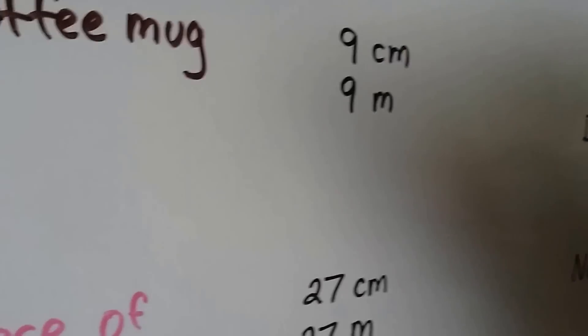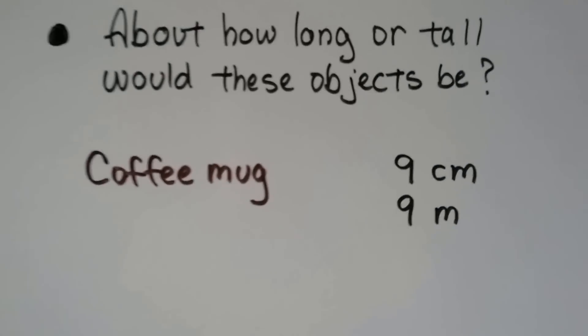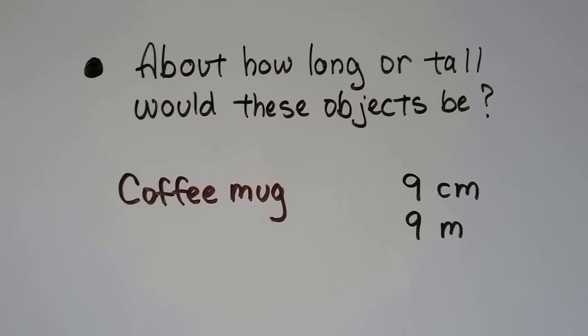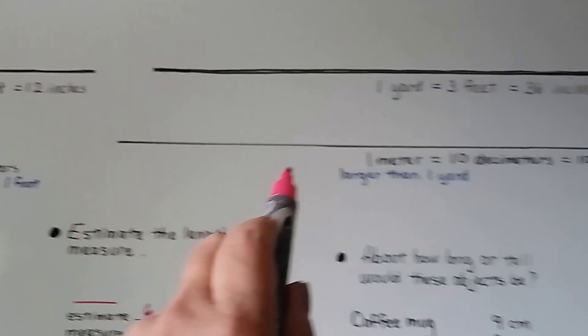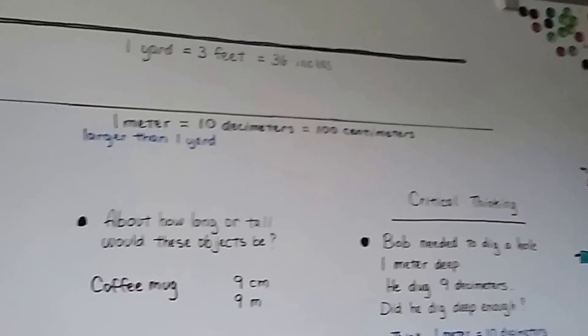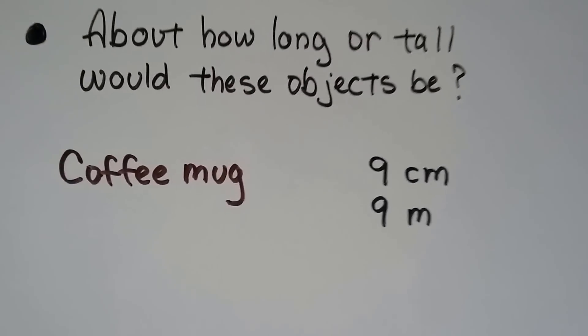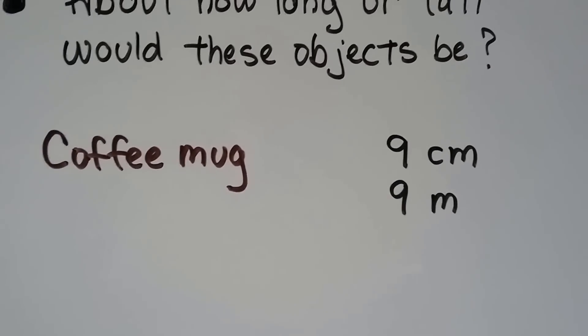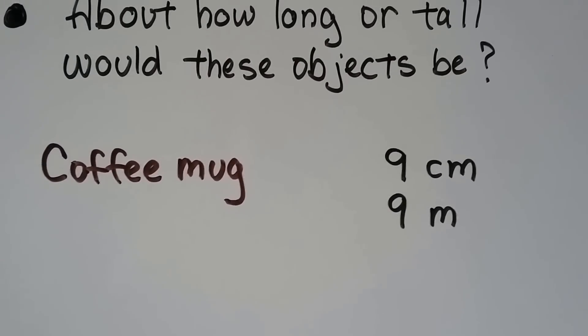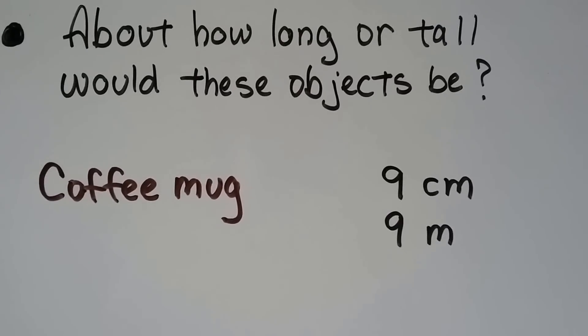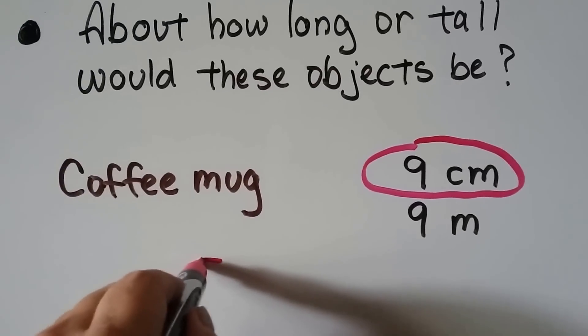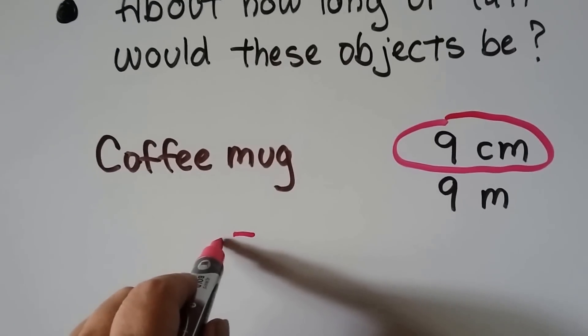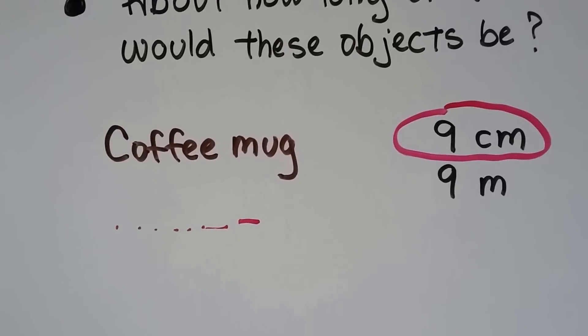Let's figure out about how long or tall would these objects be. If we had a coffee mug, do you think it would be about nine centimeters tall or about nine meters tall? Remember, that's a centimeter and that is a meter. If that coffee mug was nine meters, it would have enough coffee for a whole town. So let's say nine centimeters. If that is about a centimeter, then about nine of them would be about a coffee mug. That would be about right.